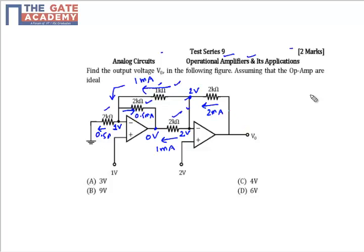Current flows from higher potential to lower potential, so my V0 will be almost 2 plus 2kΩ multiplied by 2 mA, which is 6 volt. So directly we have got that V0 is 6 volt.